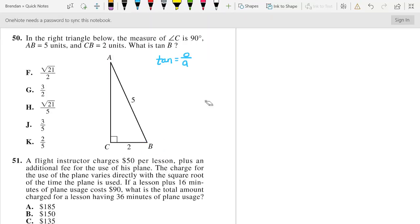Well, if they want tangent of angle B, we don't know what the opposite is, but we do know what the adjacent is. Luckily, we can figure out the opposite by using Pythagorean theorem.